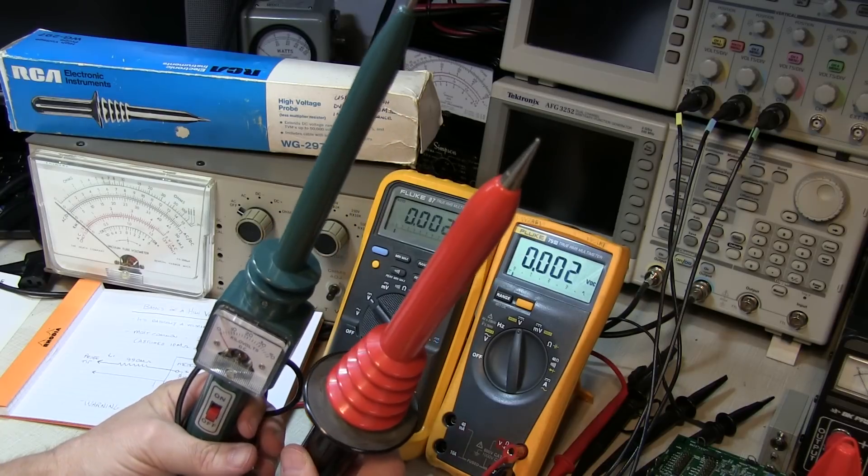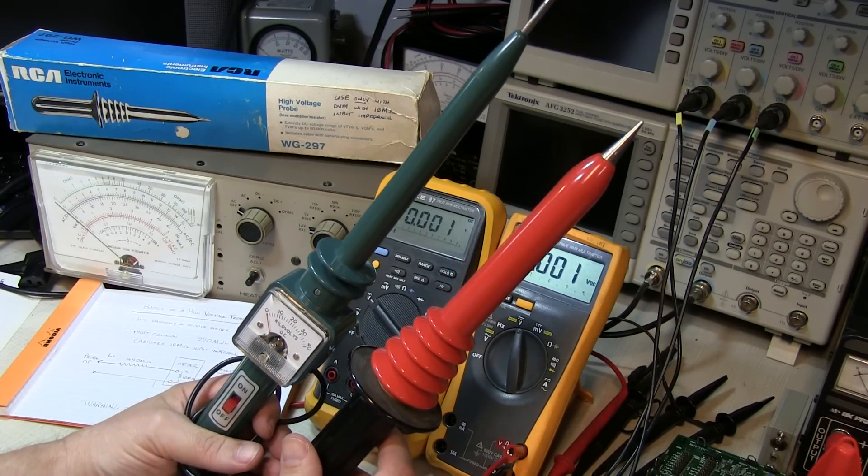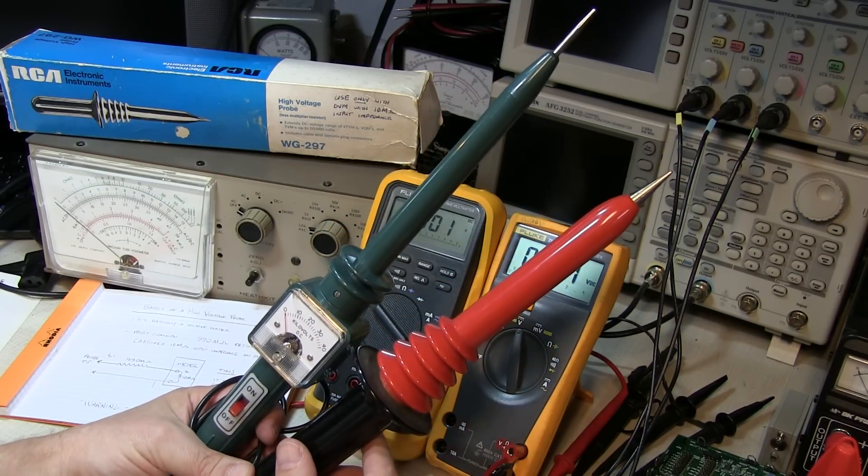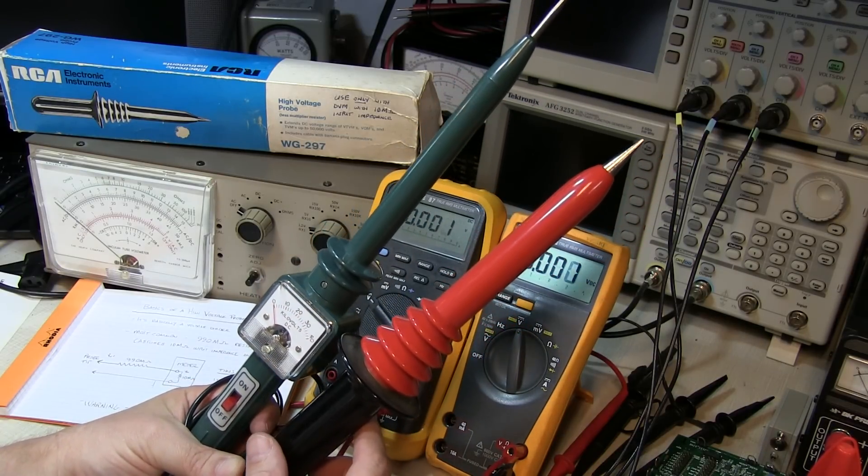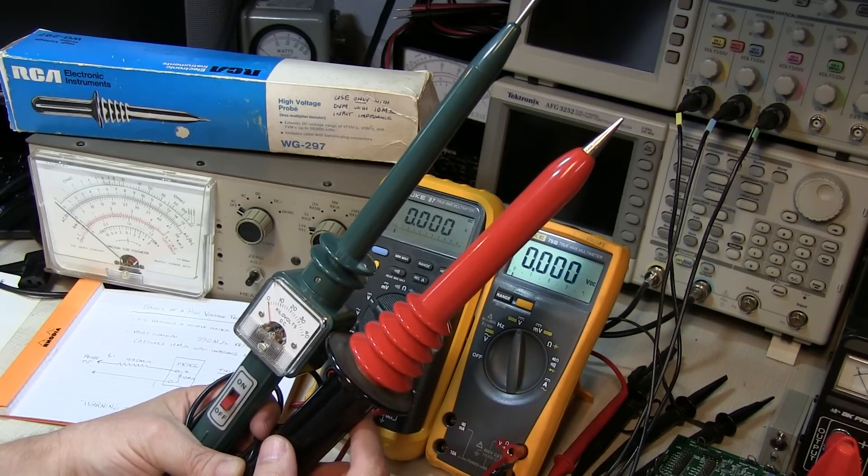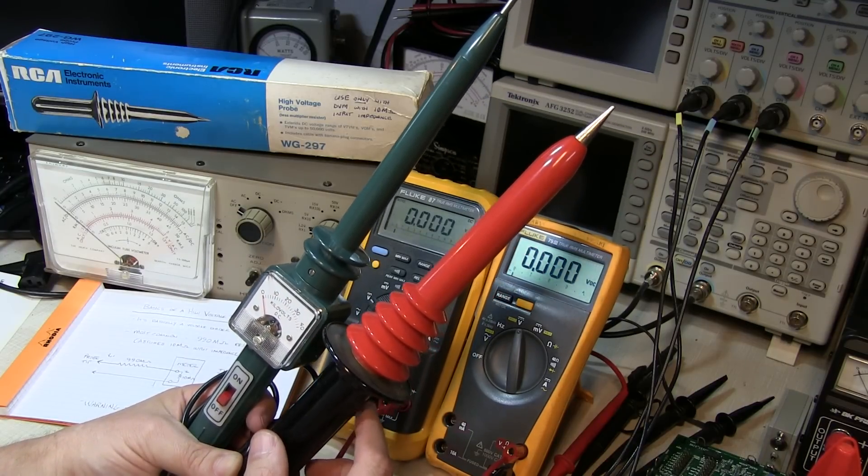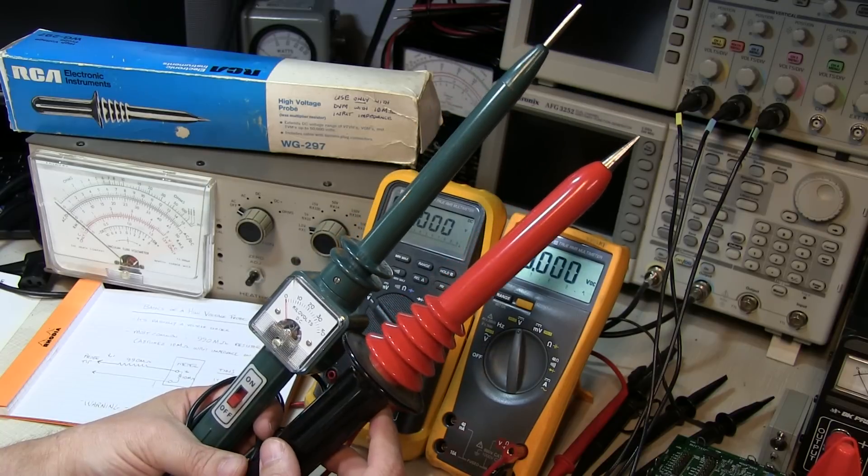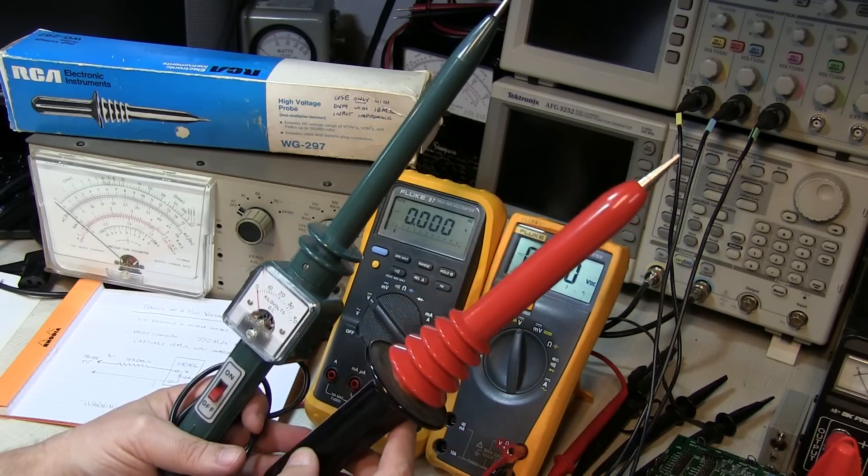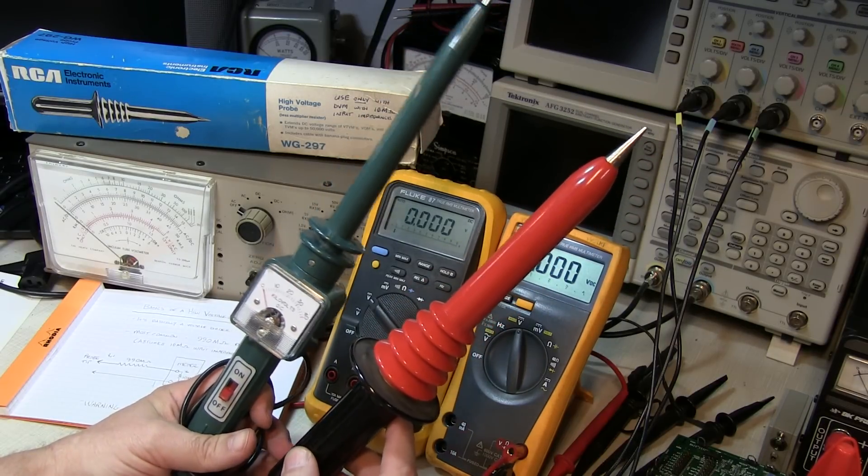These were a lot more popular back before LCD TVs and things like that, mainly for looking at the second anode voltage on the back of a picture tube. But also if you're servicing old CRT based oscilloscopes you might have to measure the voltage on the CRT, or if you're working with very high power type things, so they can still have some use.